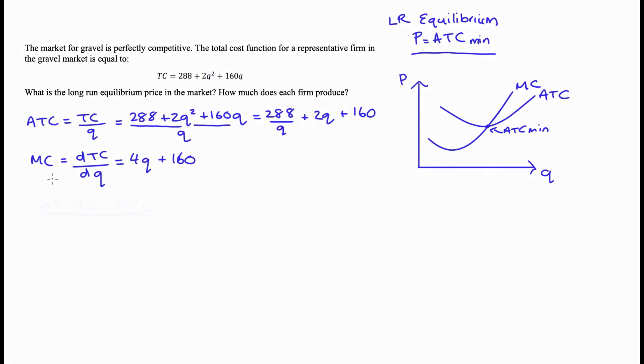So we're going to set these two functions equal to one another, and that will give us average total cost min. So I get 4q plus 160, that's equal to 288 divided by q plus 2q plus 160. We take away 160 from both sides; I'm also going to take away 2q from both sides. So 4q minus 2q will be 2q equal to 288 over q. We haven't touched that; 2q minus 2q is zero, so that's what we're left with. I'm going to multiply both sides by q. 2q times q is 2q squared, equal to—these q's cancel out—so I get 288. Divide both sides by 2.